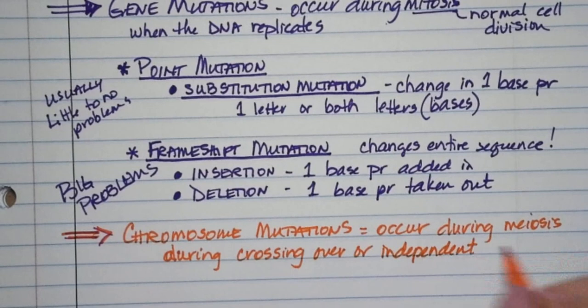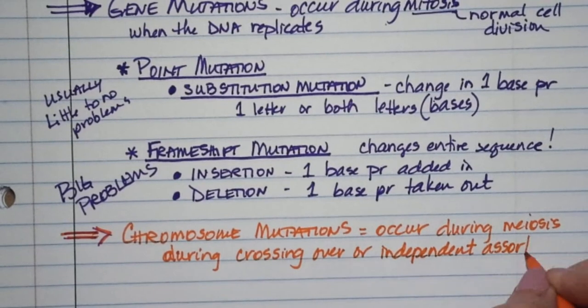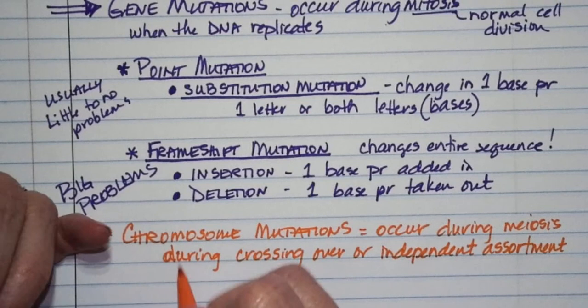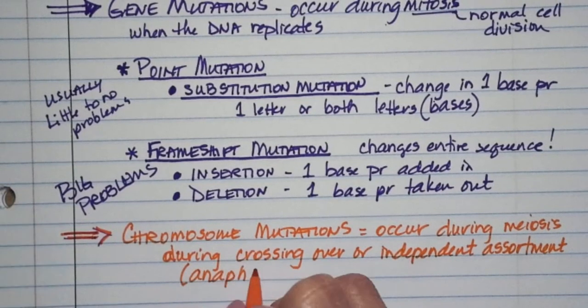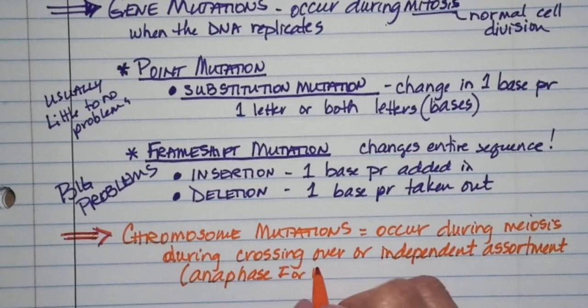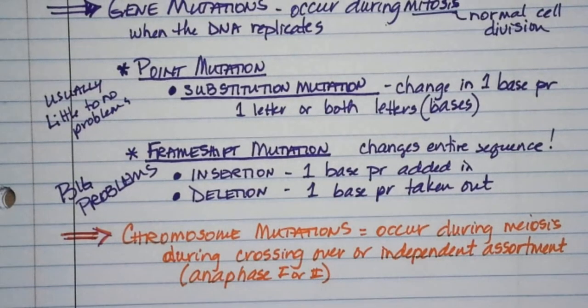In this case, we're talking about anaphase. Something happens during anaphase one or two, and things don't split up like they're supposed to. Anaphase is when the spindle fibers pull them apart, making sure that each of the new cells are going to have the right number of chromosomes. That's what's messing up here. You can have a couple of things that happen.